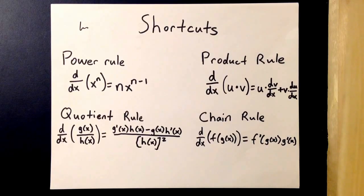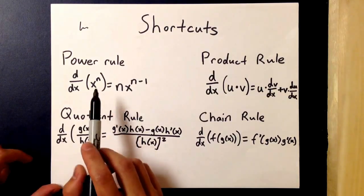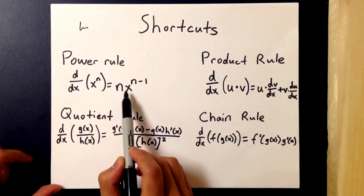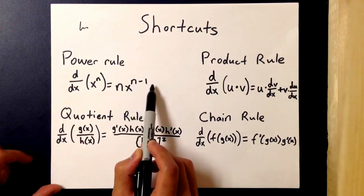The first thing that we'll cover is the power rule, where you have the format of x to the n. The derivative of that turns out to be n times x to the n minus 1.